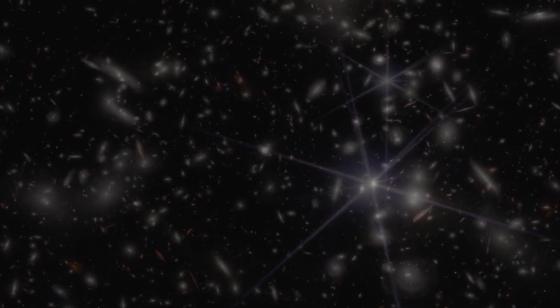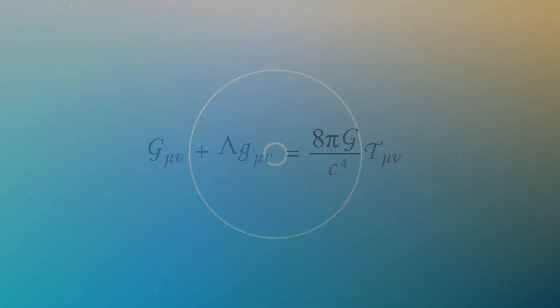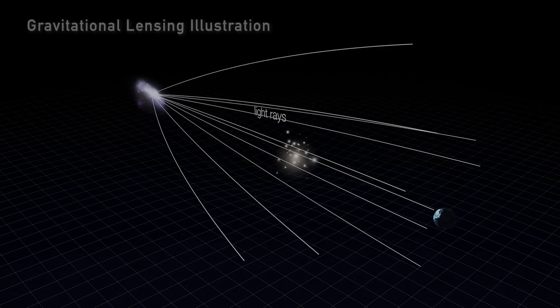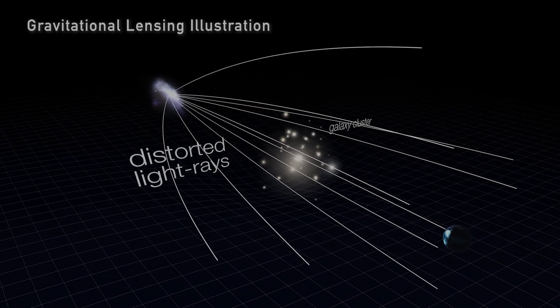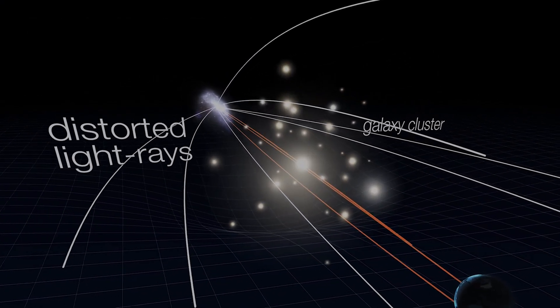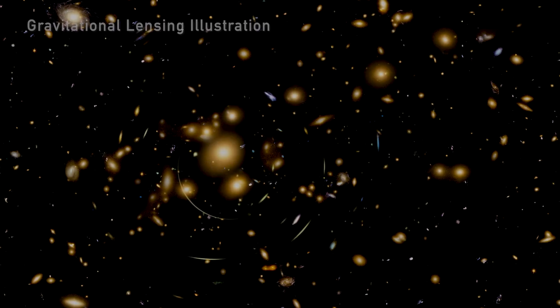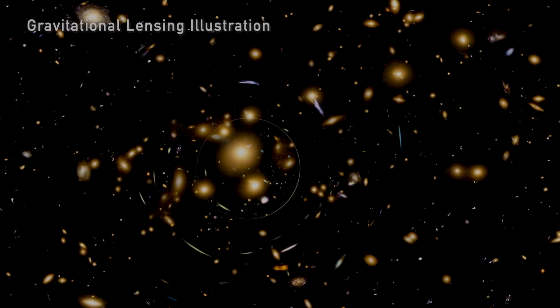But what made this image even more intriguing was that astronomers used a concept from Einstein's general theory of relativity, gravitational lensing, to see distant objects magnified by the cluster's gravitational field, which bends light from galaxies behind it, creating an even more profound view of the distant universe.